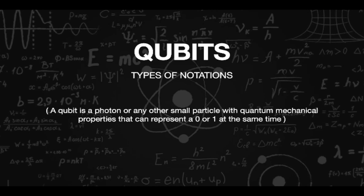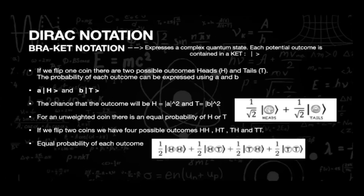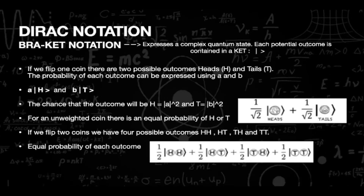There are mainly four different types of notation. The first one is Dirac notation, or bracket notation. Here, each potential outcome is contained inside a ket. For example, when we flip a coin, there can only be two possibilities — heads and tails — and it can be denoted as shown. The probability that the outcome will be heads is given by |a| squared, and tails is given by |b| squared. So |a|² + |b|² = 1. Therefore, the value of a will be 1/√2 for the outcome heads, and the value of b will be 1/√2 for the outcome tails.